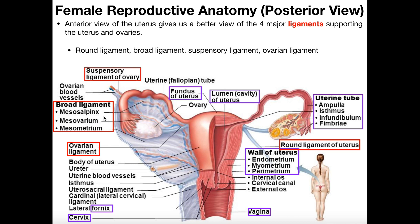The broad ligament is also divided into three separate regions. The first part is called the mesosalpinx, which is the region near the fallopian tubes — 'salpinx' being the term for uterine or fallopian tubes. The mesovarium is the part that actually surrounds the ovary. And then the mesometrium is the part that anchors to the uterus — 'metrium' referring to the uterus, as in the layers endometrium, myometrium, and parametrium.